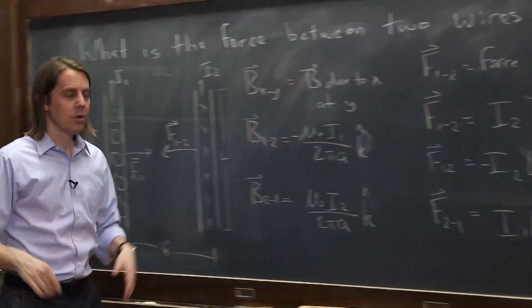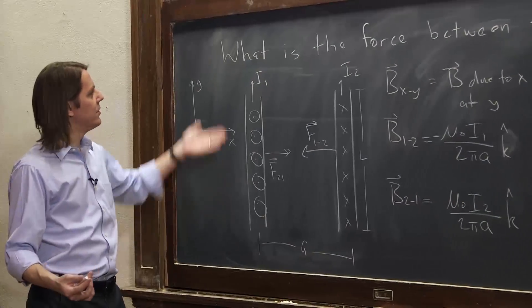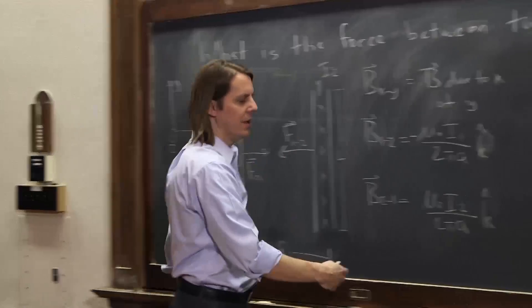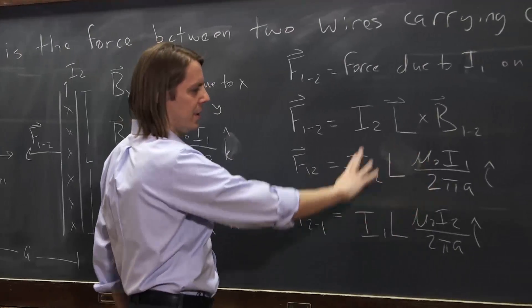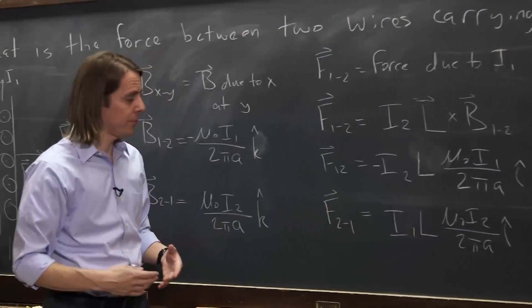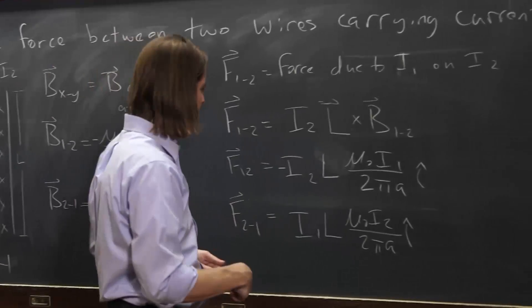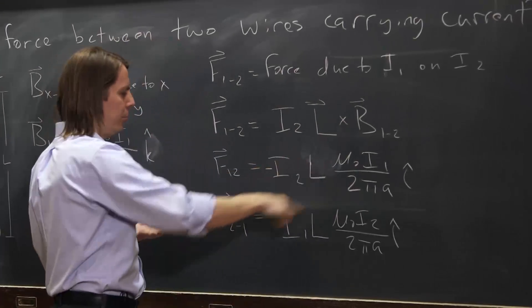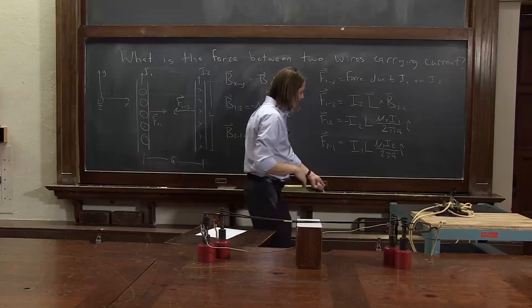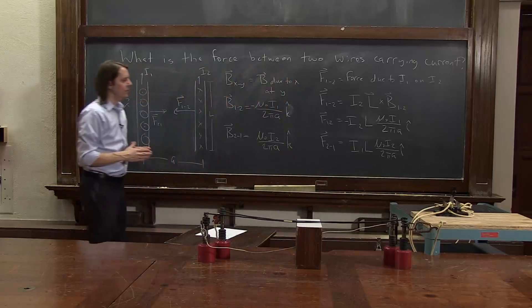So the answer to the big question is that if you have the force between two wires carrying current, if they're going the same direction, it's in. And the amount is basically the same. You see they each have an I1 and an I2. They experience the same force, just in opposite directions. If you want to express it versus length, you just pull the L, then you have force per unit length. So that's how you derive it.